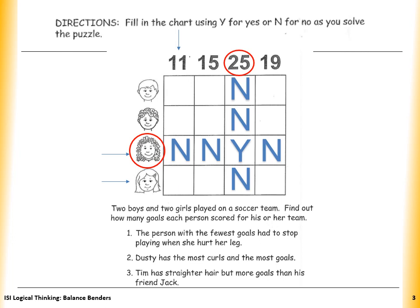Since we solved one of the girls, we still have the girl with straight hair, which is number 11 — she scored 11 goals because, from the first clue, we said she had the fewest goals. So we put Y over here and N over there.